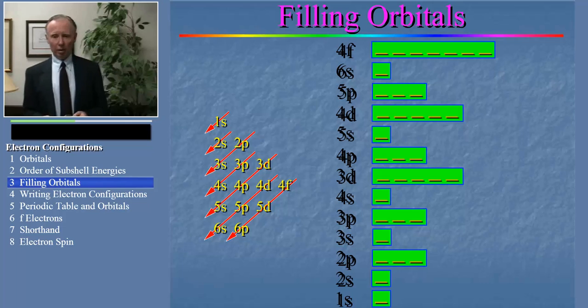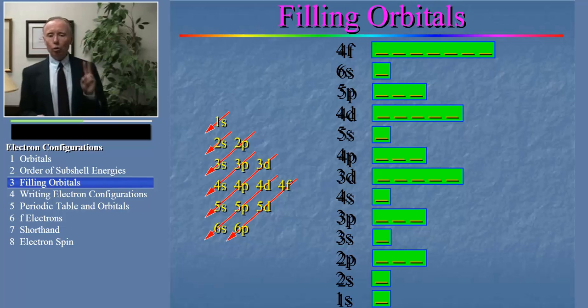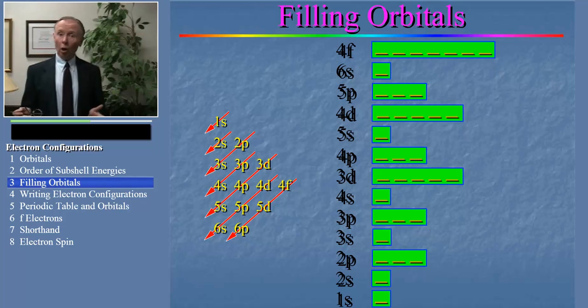Now that we have this chart, we can use it to show how the electrons fill from one element to the next. As we do so, let's remember that two electrons are allowed to occupy the same orbital.